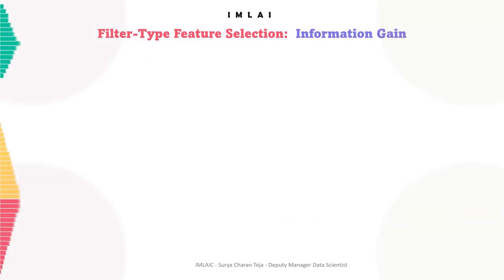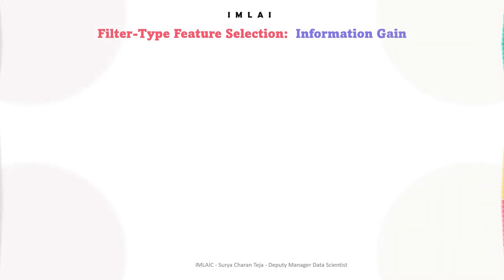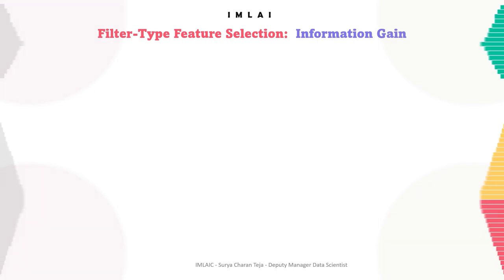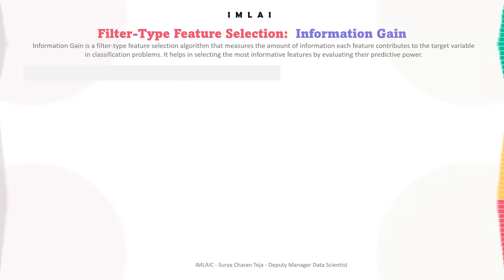Let's move on to information gain, which is a filter-type feature selection algorithm. Information gain measures the amount of information each feature contributes to the target variable in classification problems. It helps in selecting the most informative features by evaluating their predictive power.